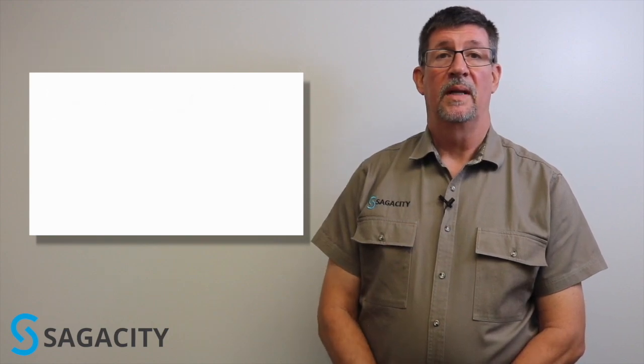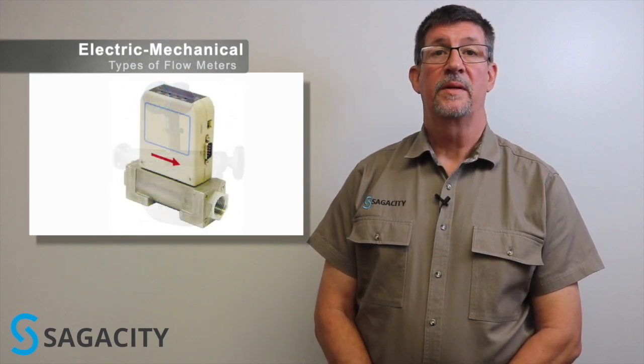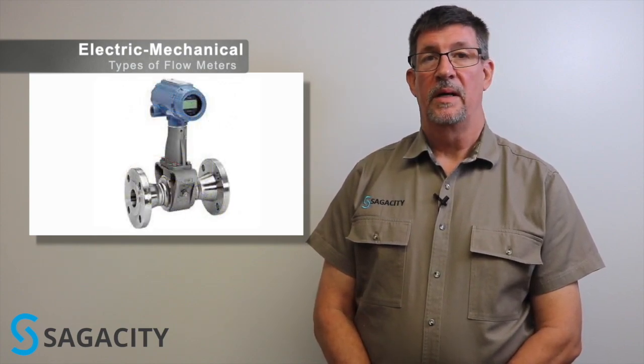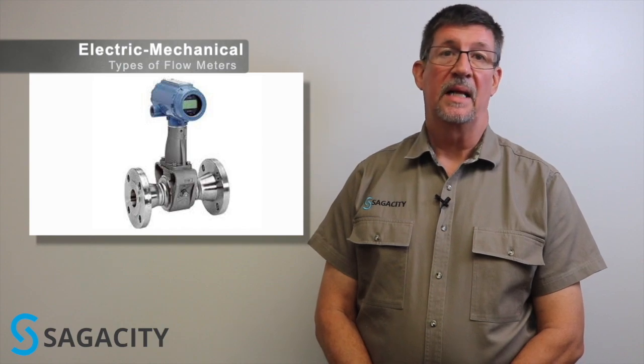We now move to electromechanical flow meters. These include magnetic flow meters, Coriolis meters, thermal mass meters, and vortex meters. These devices are either imposing an electrical signal or looking for an electrical current in the form of a frequency or voltage from the flow stream itself.